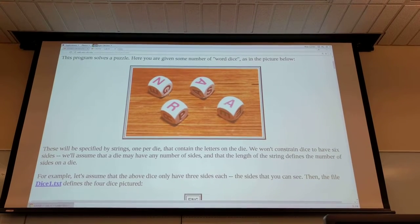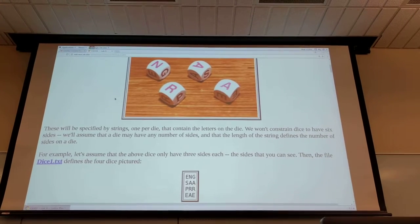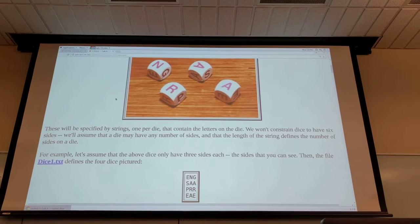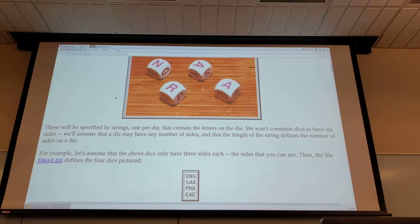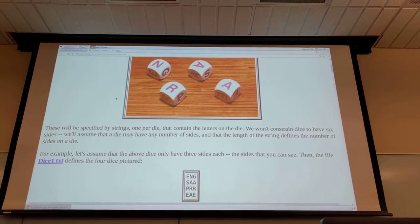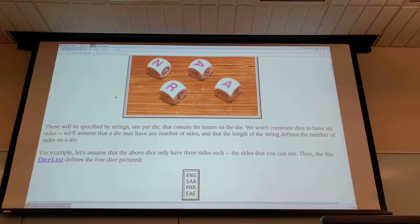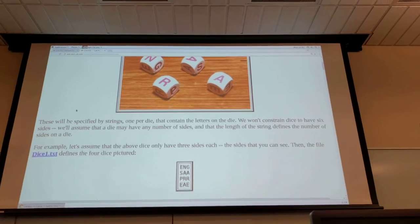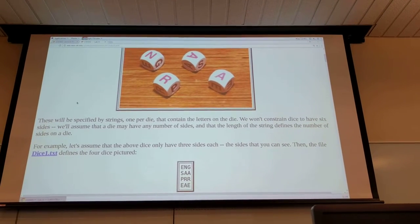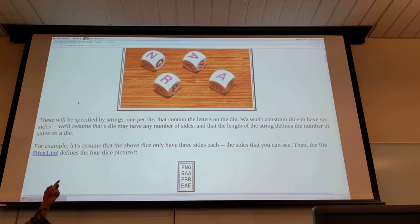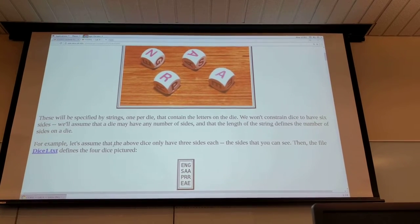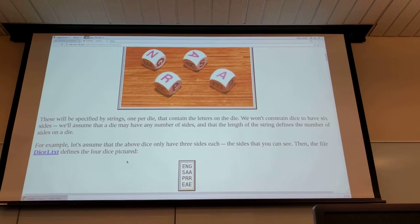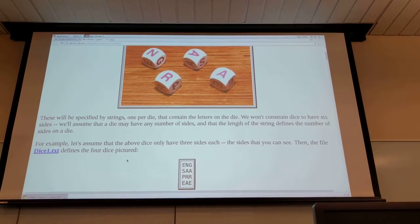The dies will be specified by a string, one string per die, and the string contains the letters that occur on the die. The die are not constrained to six-sided die so you can have a die of any size and the length of that string determines the number of sides the die will have. So for example if you assume that the above die are three sides each, just the size that you can see,